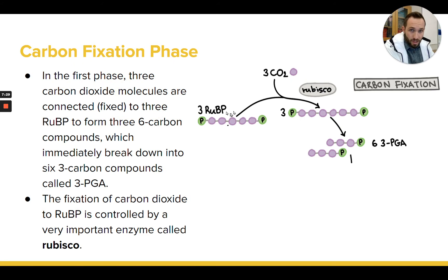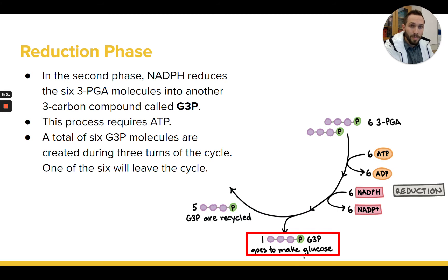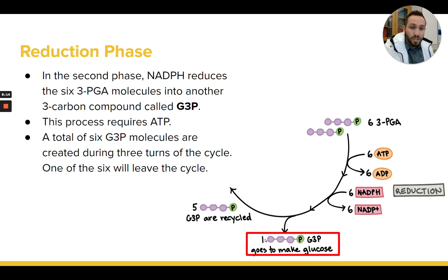We're looking at the cycle as if it's happening three times at once. In the first phase, three molecules of RuBiP joined with three molecules of CO2 to become six molecules of 3PGA. Then in the reduction phase, all six of those 3PGA molecules become six molecules of G3P. Every three Calvin cycles will produce six G3Ps, and the rule is: every time you have six G3Ps, one of those G3Ps gets to leave the cycle. That leftover G3P is what the plant cell gets to use to build glucose, sugar, and other organic molecules.